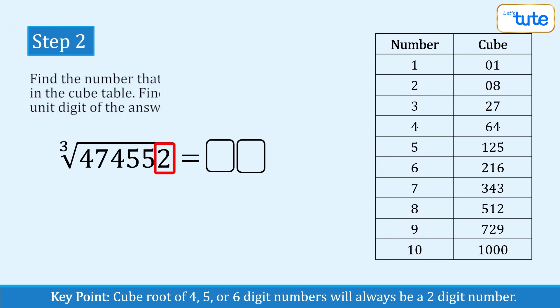Yes, next we'll have to look at the perfect cube number that ends with 2. It's 512 and now we'll take its cube root which is 8 and this 8 will be the unit place digit of the cube root of 474552.